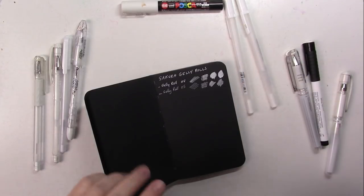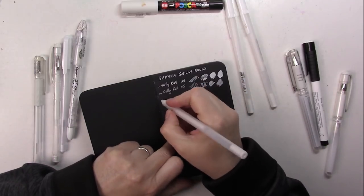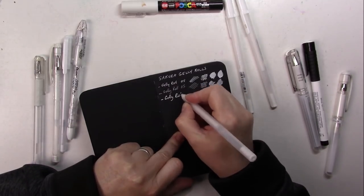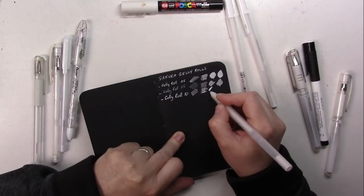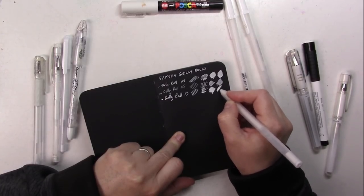Now we're going to do the number 0.10 which is a much thicker tip. The ink flow for this one is really nice.